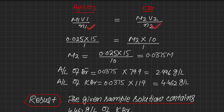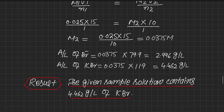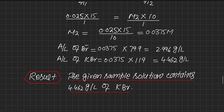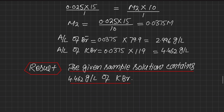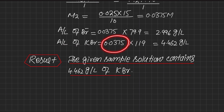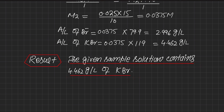Since n1 = n2 (one molecule of silver nitrate reacts with one molecule of potassium bromide, ratio 1:1), we solve for M2 by rearranging. The answer is M2 = 0.0375 M — this is the molarity of KBr. To find the amount per liter of bromide ions, multiply this molarity by the atomic weight of bromide (79.9), giving 2.996 g/L of bromide. To find the amount per liter of potassium bromide, multiply by the formula weight of KBr (119), giving 4.462 g/L. The given sample solution contains 4.462 g/L of potassium bromide.